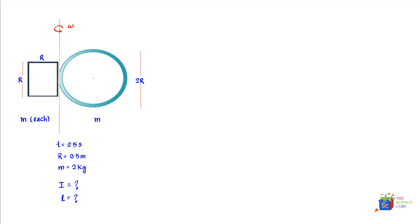First we'll find the moment of inertia for the hoop, then for each of the four bars of the square structure — finding the i value for each bar in turn, noting that two of them will share the same value.